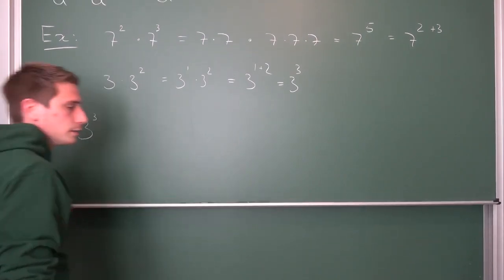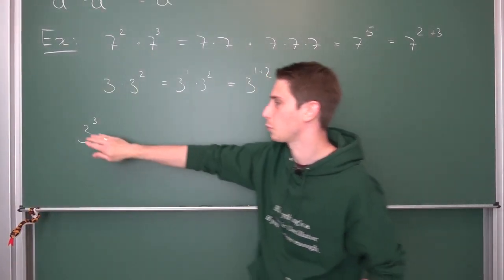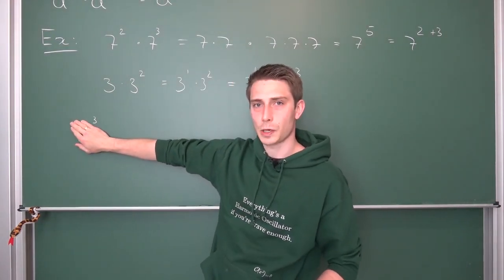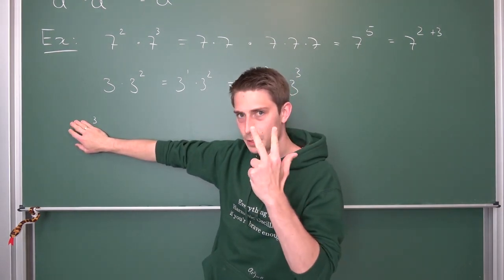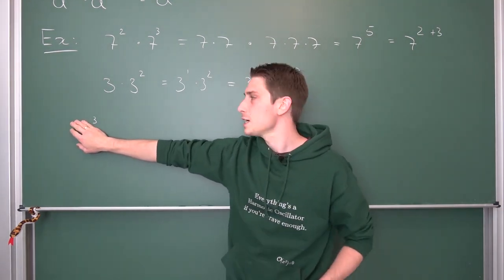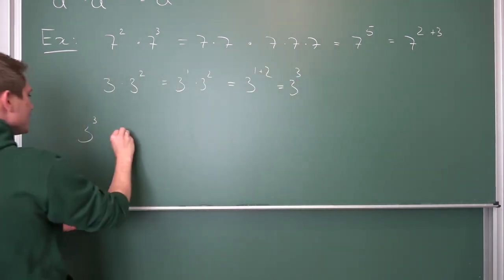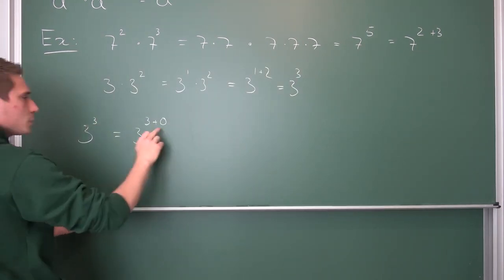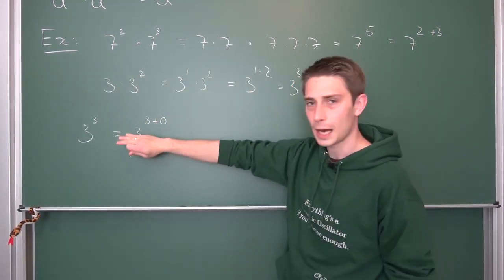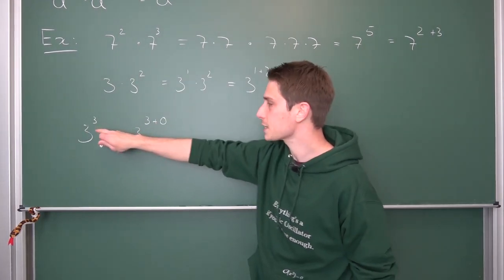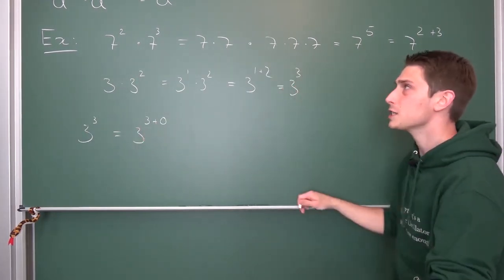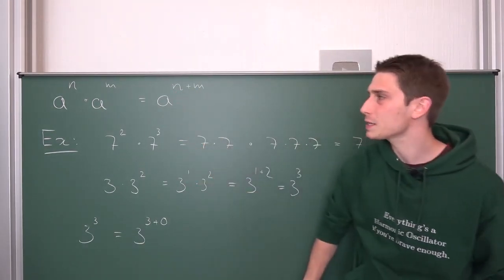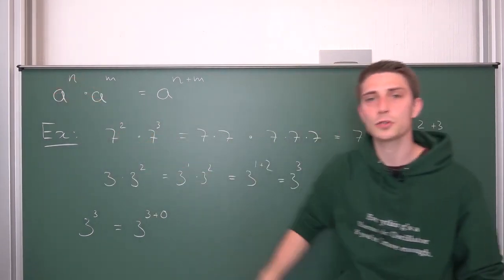3 to the third power. Let us look at the exponent. This 3 up here in the exponent — if I have 3 apples and I don't place any other apple next to it, I still have 3 apples. So this 3 up here is going to stay a 3 even if we were to add a 0 to the exponent. I hope you agree: 3 is the same as 3 plus 0.